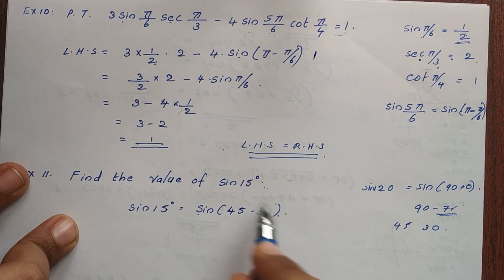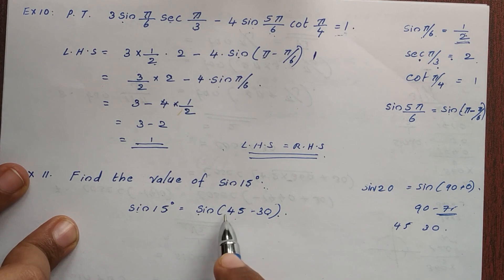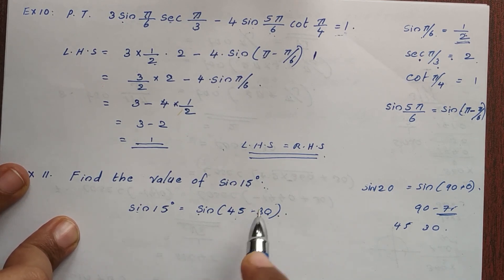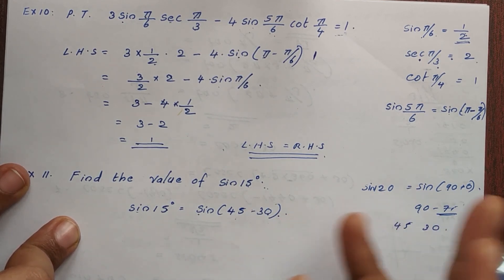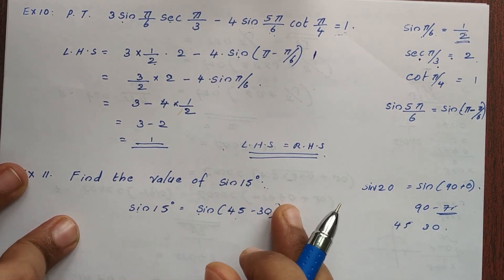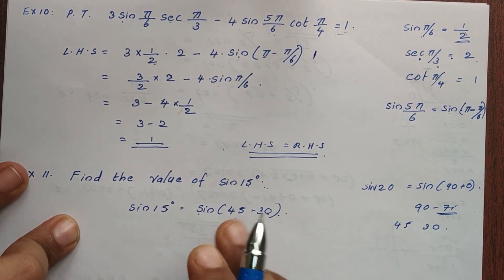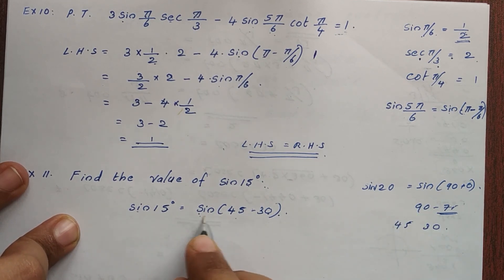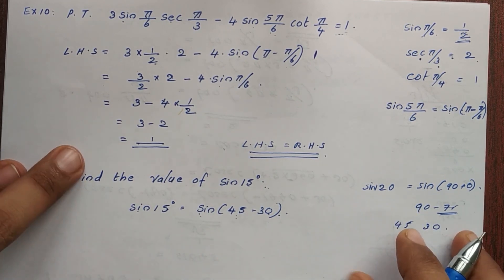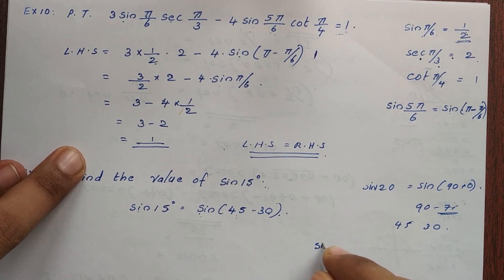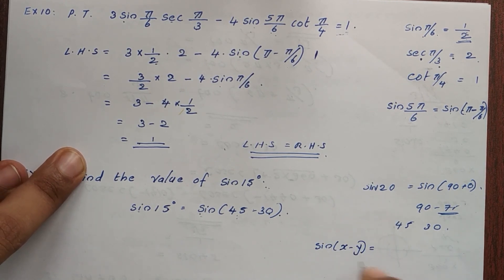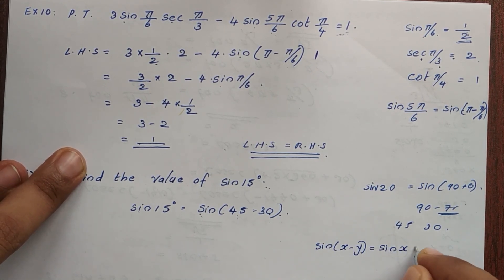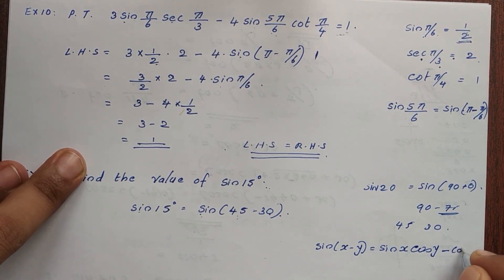Now we can solve this using the formula. We need to write the result: sin(x − y) is equal to sin(x)cos(y) minus cos(x)sin(y).